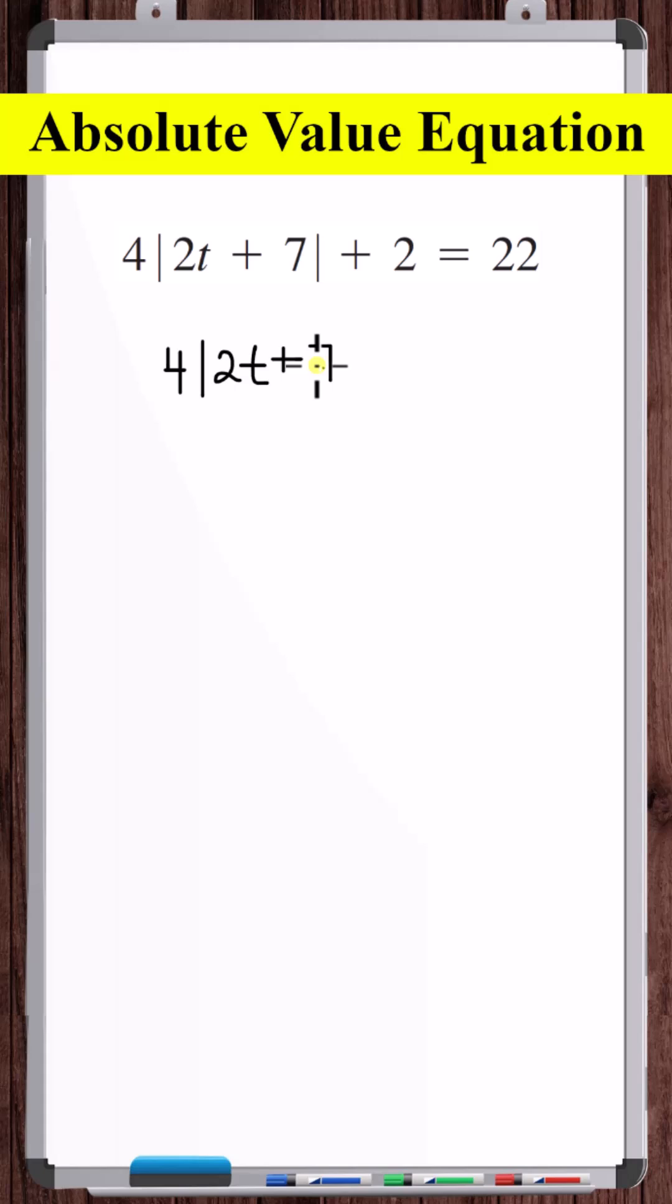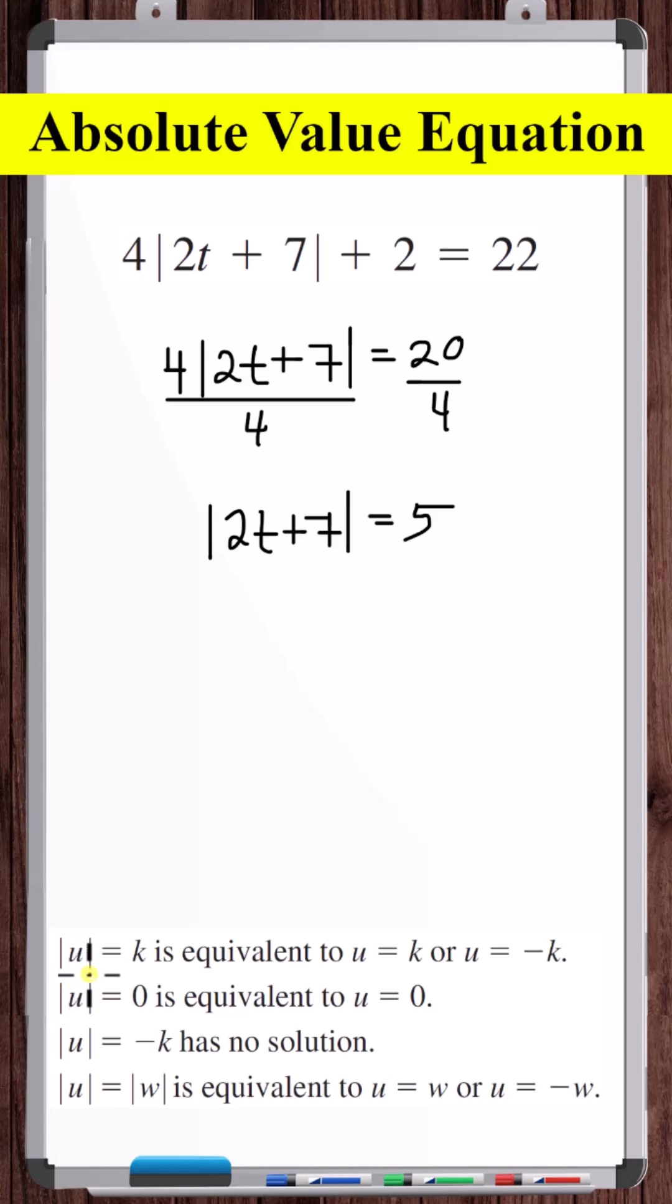So let's subtract 2 from both sides. Now let's divide both sides by 4. Now we see we have the absolute value of an expression equal to a constant. That's what we have.